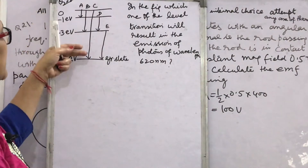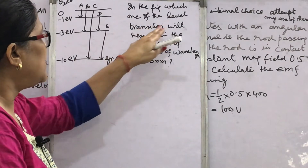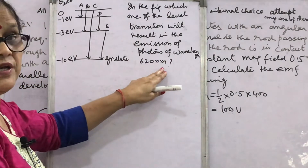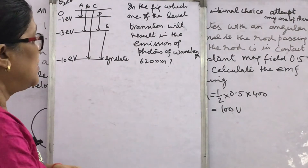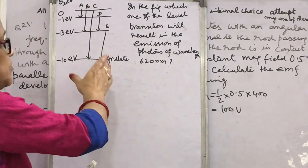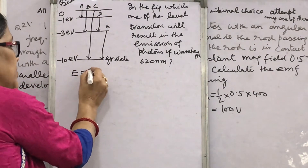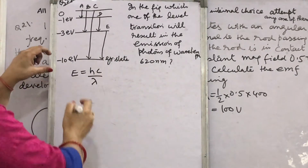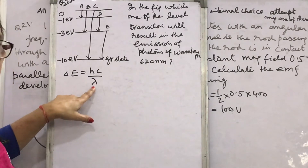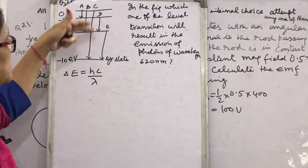In question 22, the energy level diagram for an atom of any element is given. Which level transition will result in the emission of photons of wavelength 620 nanometre? To save time, use E = hc/lambda. This energy is the energy difference between any two levels. If lambda is given, put in the value, find the energy difference, then identify which two energy levels correspond to the proper transition.